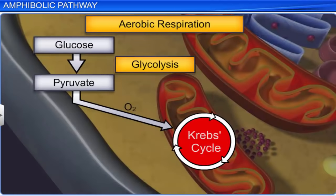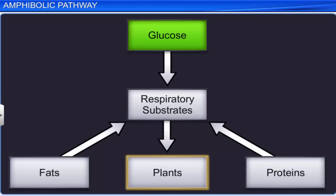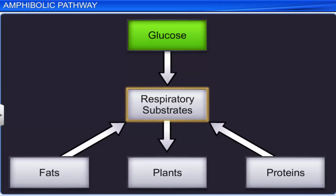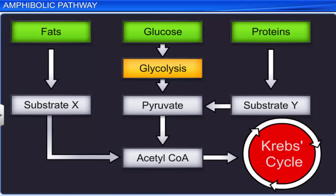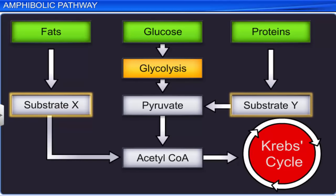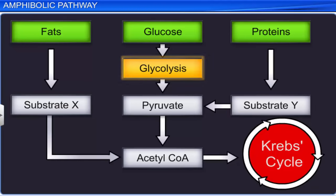We have seen how the glucose substrate is oxidized during glycolysis and observed the Krebs cycle during aerobic respiration. But plants also use substances such as fats and proteins as respiratory substrates. Though pure fats or proteins cannot be directly used as substrates, they can enter as intermediary substrates of glycolysis and the Krebs cycle.